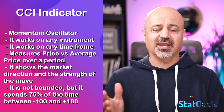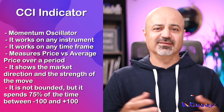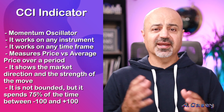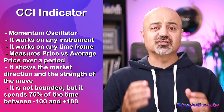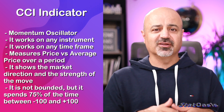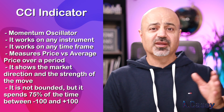The CCI indicator was developed by Donald Lambert and was published in the Stocks and Commodities magazine in 1980. It works on every instrument and every time frame. It is a momentum oscillator that measures the recent price change relative to the average price change of the previous period. That previous period is optimizable — it's a length input where you can put any number you like.